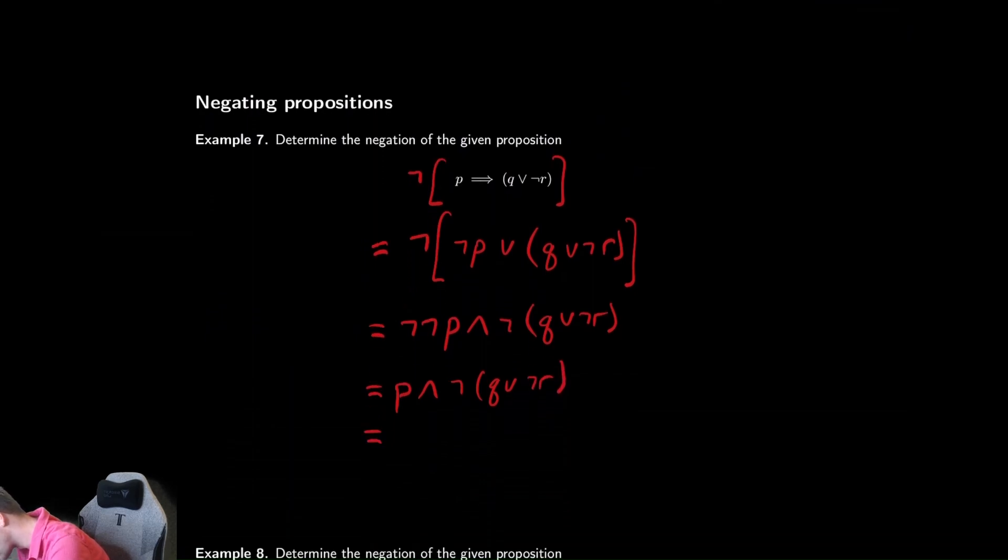And then we can use De Morgan's again and get not q and not not r. Again using the double negation we can get p and not q and r.